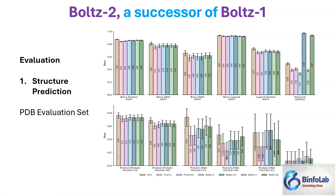BOLDS-2 shows best performance on RNA and DNA complexes with proteins, while in other cases it remains comparable. Somehow in some places Alpha-4-3 was slightly better. But BOLDS-2 is not famous for these things — it's actually famous and got its hype because of calculating and presenting affinity values.